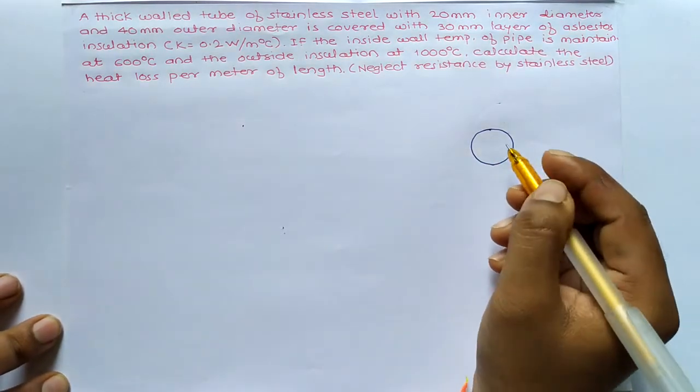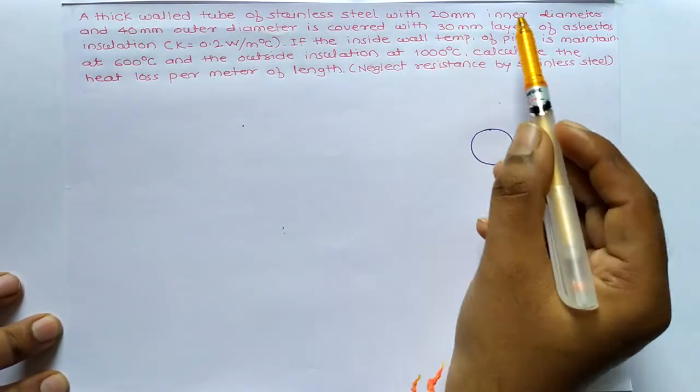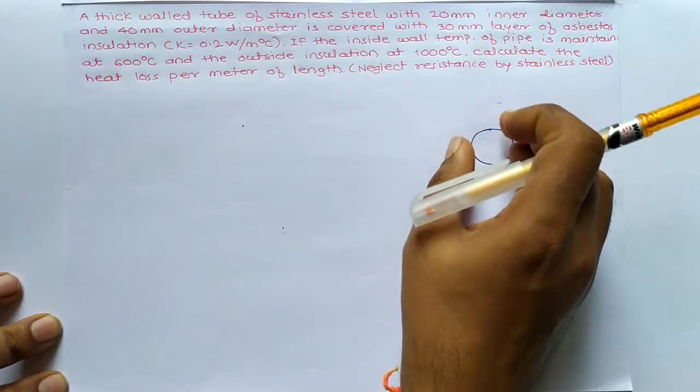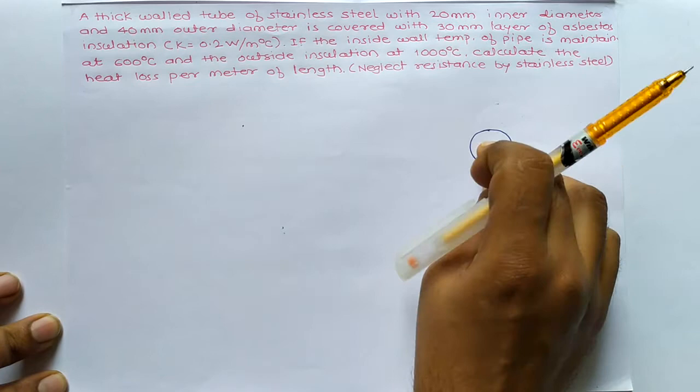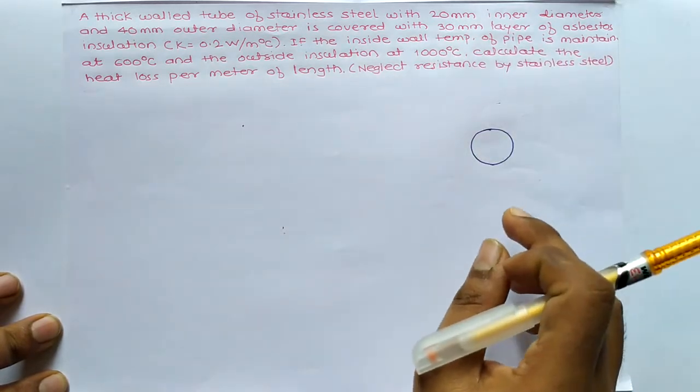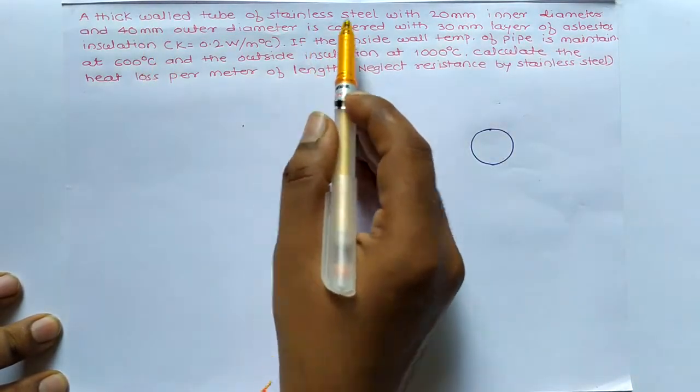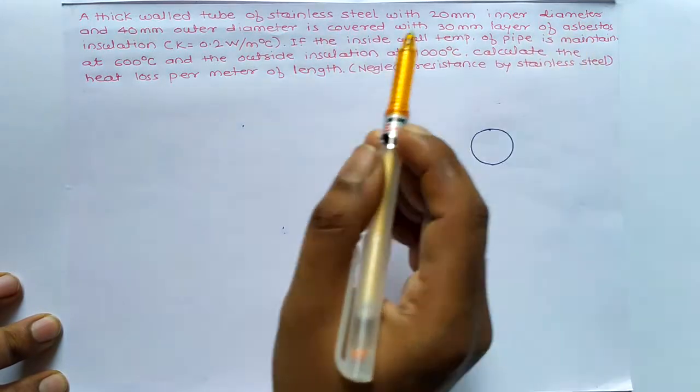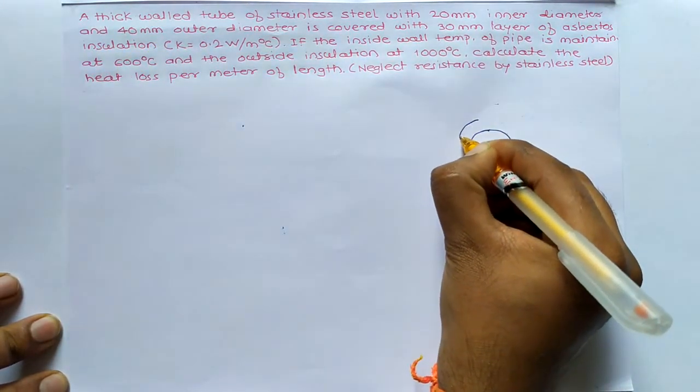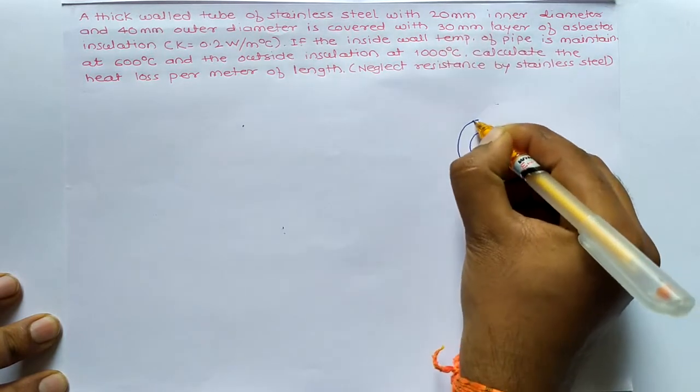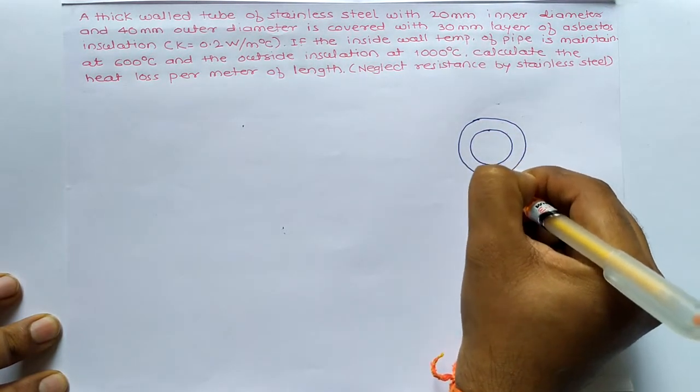Don't be in a hurry to plot R1 and R2. After forming the diagram, plot R1 from inside to the outside. So stainless steel with 20mm inner diameter and 40mm outer diameter. So here it is 40mm outer diameter.